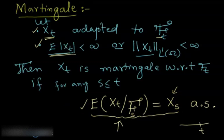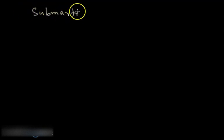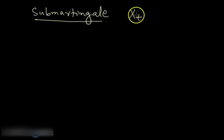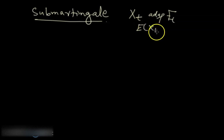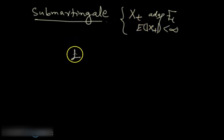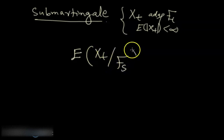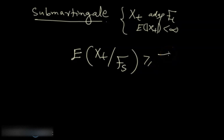Then we have sub-martingale and super-martingale. You just need to replace the equality with an inequality. For sub-martingale, a process is said to be a sub-martingale if it is adapted to F_t, its expectation is finite, and the expectation of X(t) given F_s is greater than or equal to X(s) almost surely.